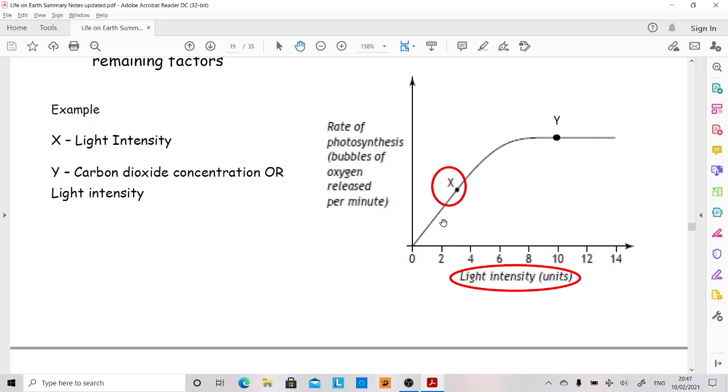If you want to know what the limiting factor at a slope bit on the graph, this slope here, you look down here and that's your answer. The limiting factor at the slope bit of the graph is always what's written here.